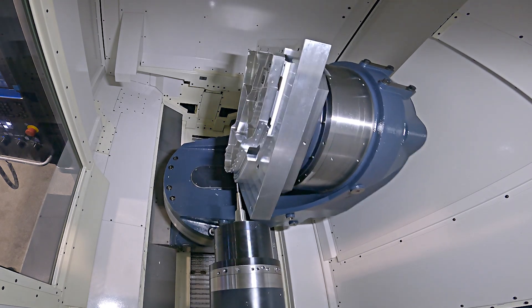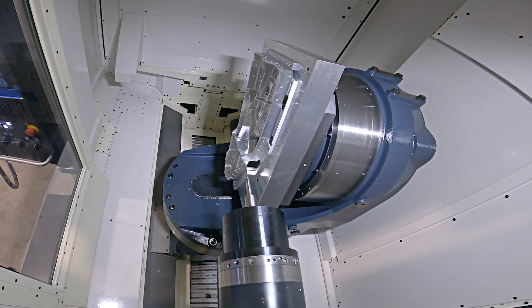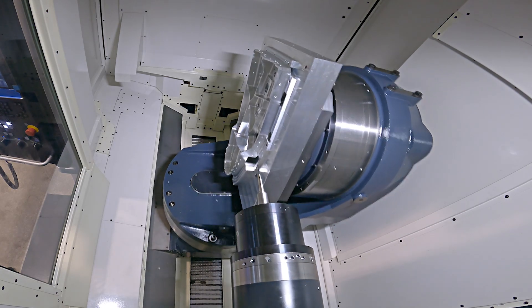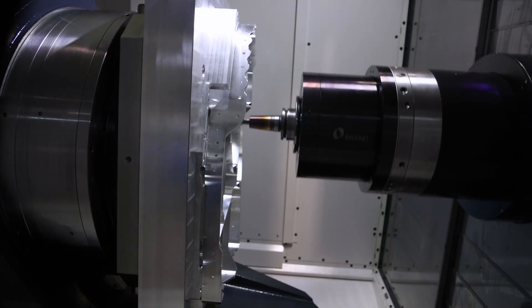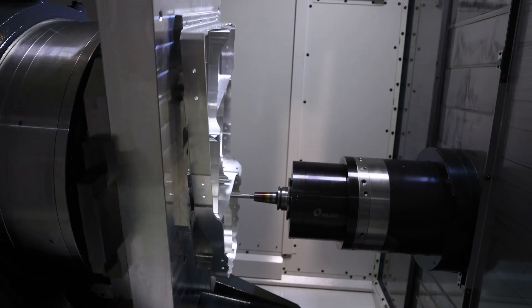We have a standard 14,000 RPM spindle which is suitable for hard metal and soft metal. And we have a 24K spindle which is designed specifically for structural aluminum components.